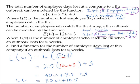So L(W) = 30W + 10.5, and this function calculates the employee days lost when the outbreak lasts for W weeks.